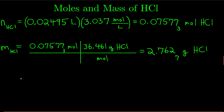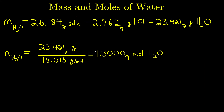The reason I wanted to calculate the grams of hydrochloric acid is I also want to find the moles of water. To do that I need to know the grams of water. I measured the mass of my solution in the beginning — 26.184 grams. This is how many grams of hydrochloric acid is in there; the difference is how many grams of actual water I had in that solution. To get the moles, I take the mass divided by the molar mass.